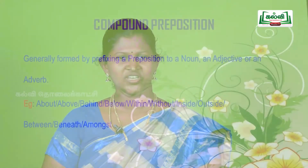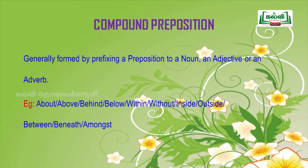The next one is compound preposition. Compound preposition is generally formed by prefixing a preposition to a noun, an adjective, or an adverb. Examples: about, above, behind, below, within, without, inside, outside, between, beneath, amongst.